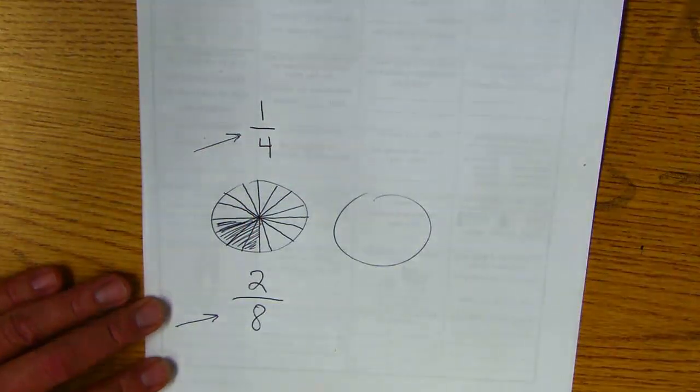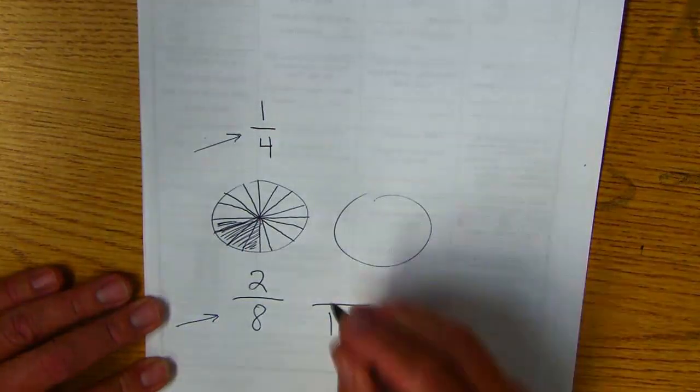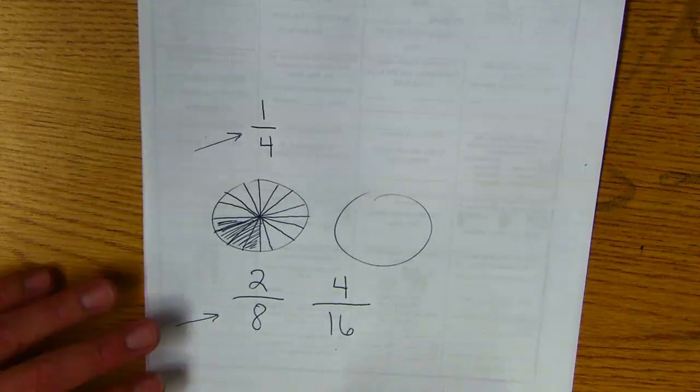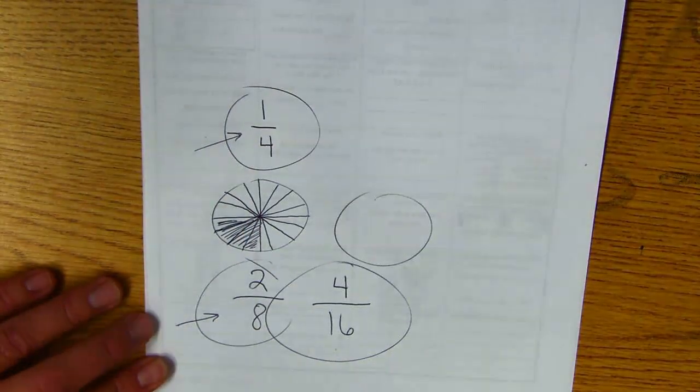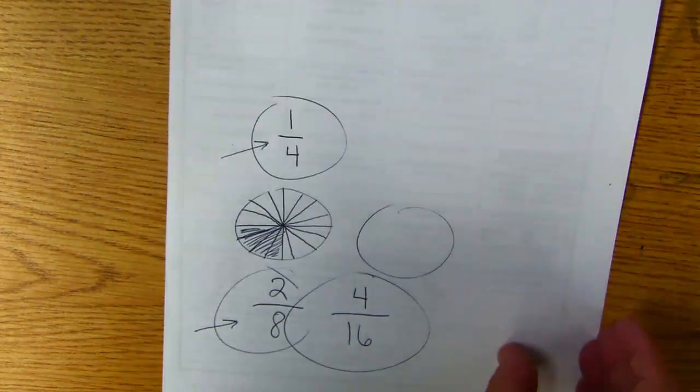I have sixteen pieces and four that are colored. One fourth, two eighths, and four sixteenths are all equal. It's all the same amount of pizza. Okay, that's what equivalent means, it's the same amount.